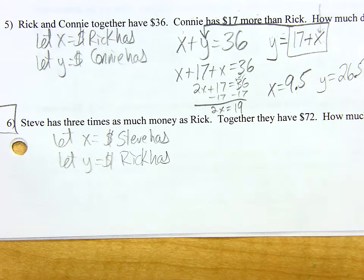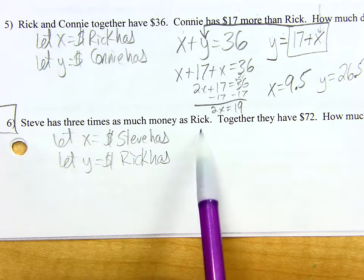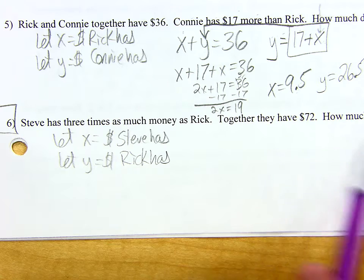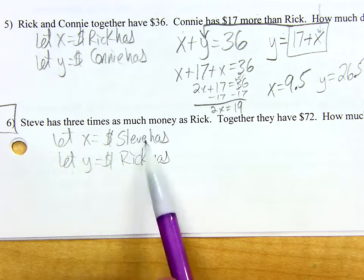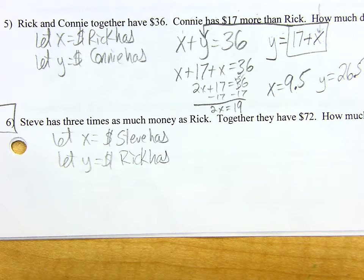We're back to Steve and Rick. Steve has three times as much money as Rick. Together they have $72. How much does each have? We're going to say X is the money Steve has, Y is the money Rick has.